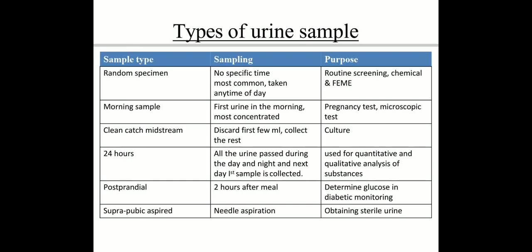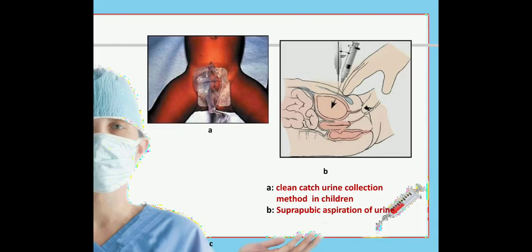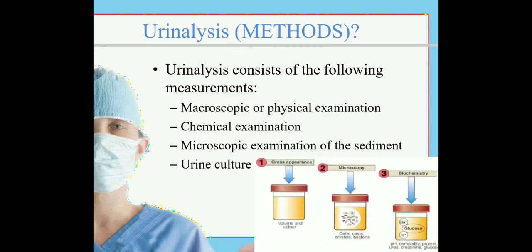The next sample type is suprapubic aspirate, done through needle aspiration to obtain sterile urine. In image A you can see the clean catch urine collection method in children, and in image B you can see suprapubic aspiration directly from the bladder. There are mainly four types of methods in urine analysis: macroscopic or physical examination, chemical examination, microscopic examination of the sediment, and urine culture.